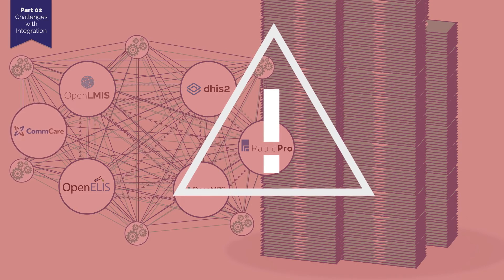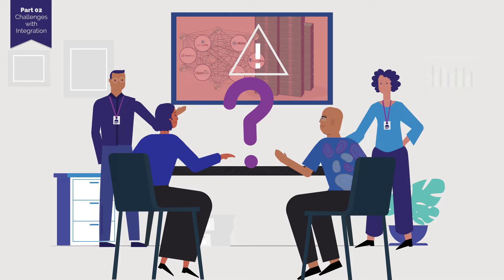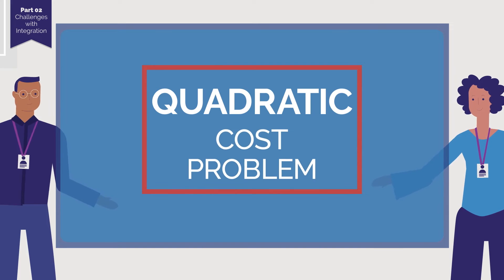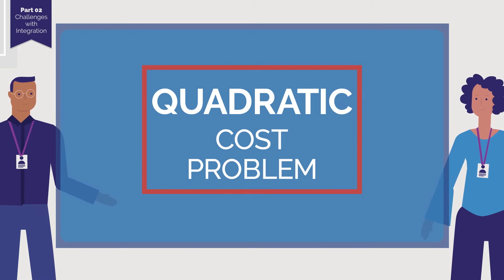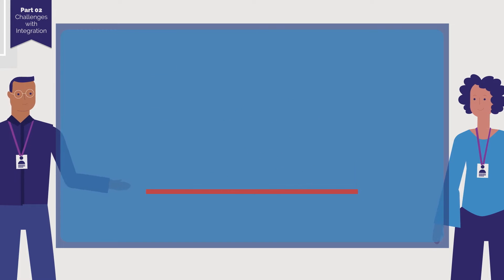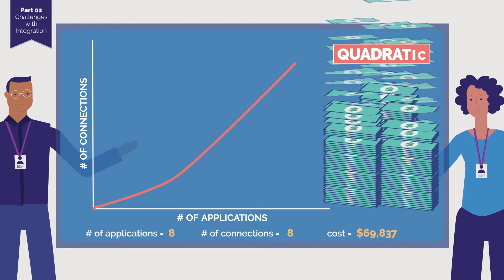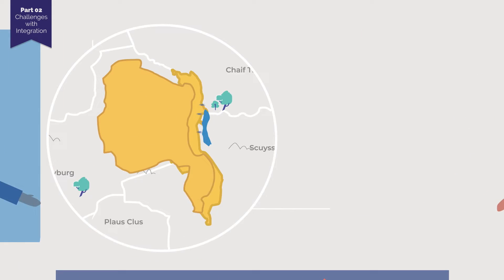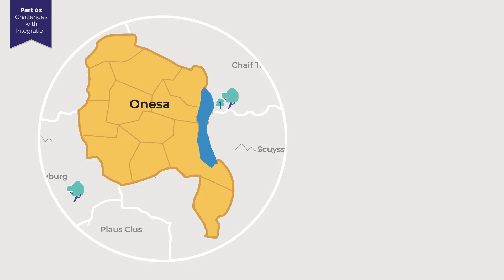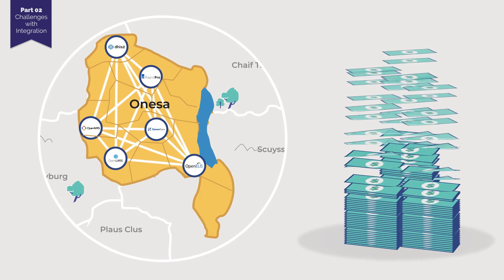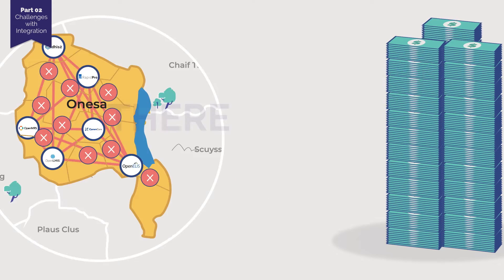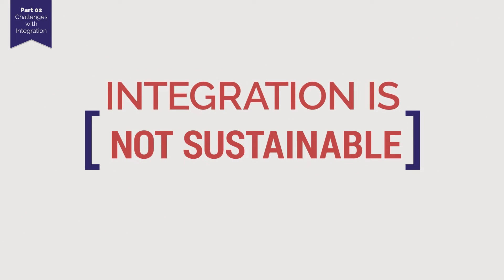Why does the cost and complexity rise so significantly with each additional application? The software development team explains that it is due to a problem known as the quadratic cost problem, named after the mathematical concept they illustrate here. The number of bi-directional connections increase quadratically, not linearly, with each integration of a new application. When you have a country with as many systems as Onessa, by the time you need any more than three applications, the cost and complexity rise much faster than the number of digital health applications you are trying to connect. There must be a better way — integration is not sustainable.